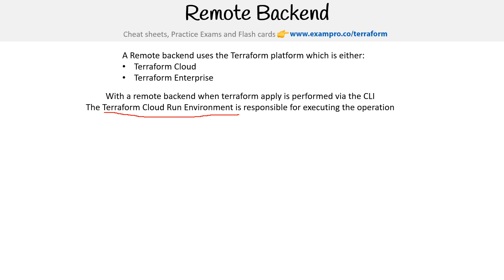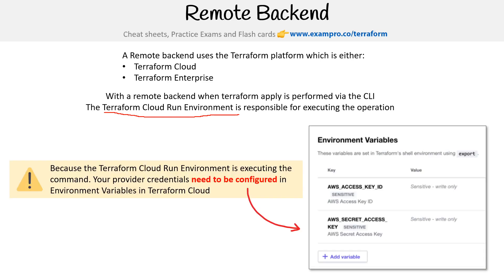One thing I really want you to know about remote backends — because this really tripped me up when I was making the follow-along — is that because the Terraform Cloud run environment is the one executing the command, your provider credentials need to be configured in the environment variables in Terraform Cloud. If you had a project configured with TF vars locally and then swapped out your remote backend, it's not going to work the way you expect, because the Terraform Cloud run environment is not going to take your credentials and move them to the cloud. You have to do that yourself.